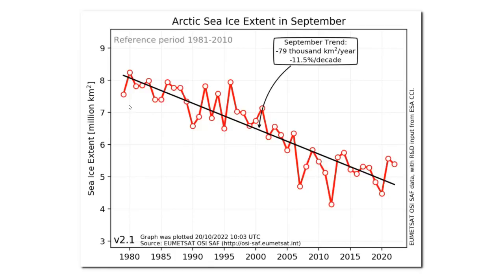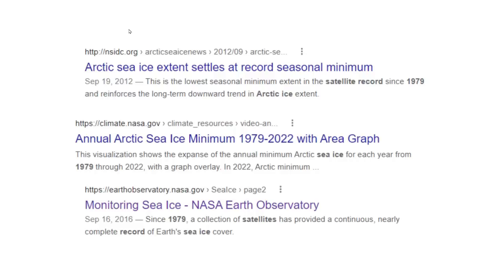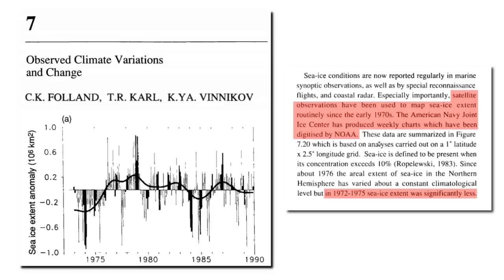The next question is why did they start their graph in 1979 and not show earlier years? The National Snow and Ice Data Center and NASA say that the satellite record began in 1979. This is a good story except for the fact that it isn't true. The 1990 report of the United Nations Intergovernmental Panel on Climate Change said satellite observations have been used to map sea ice extent routinely since the early 1970s.